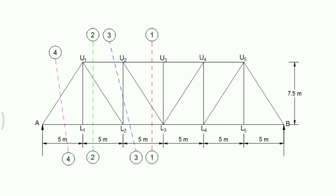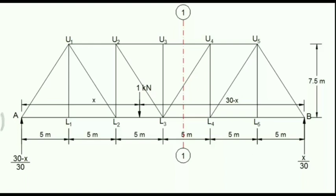We now analyze the truss to determine forces in each member. Two methods are available: method of section and method of joints. Since the loading is a moving load (dynamic loading), we use the method of section. We take sections 1-1, 2-2, 3-3, and 4-4 cutting all left-hand side members. When a unit load is placed at distance x from A, the reaction at A is (30 − x)/30 and the reaction at B is x/30.